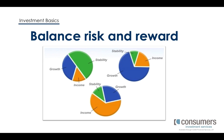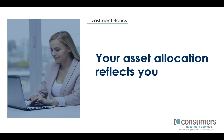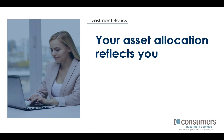Most investors like to combine all three. Probably your best way to maximize your overall return without taking more risk than you're comfortable with is to have the right balance between stability, income, and growth. That balance is known as your asset allocation.